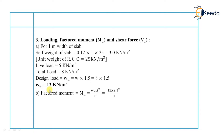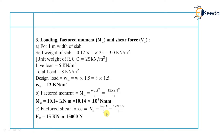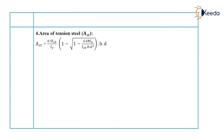Now we calculate the factored moment. As a simply supported slab is given, moment equals WL²/8, which equals 10.14 kN·m per meter, or 10.14 × 10⁶ N·mm. The formula for shear force for a simply supported slab is WL/2. So shear force equals 12 × 2.6 / 2, which equals 15 kN or 15,000 N.